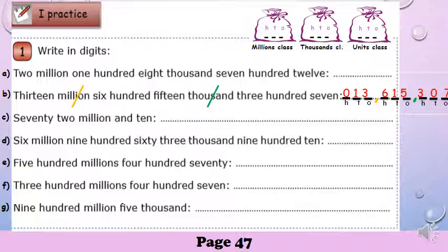After the million, after the yellow comma, we have six hundreds — so we write six in the hundreds. Fifteen: one in the tens, five in the ones. And after the thousand, after the green comma, we write three hundred — three in the hundreds, seven in the ones, and no tens here, so we write zero.